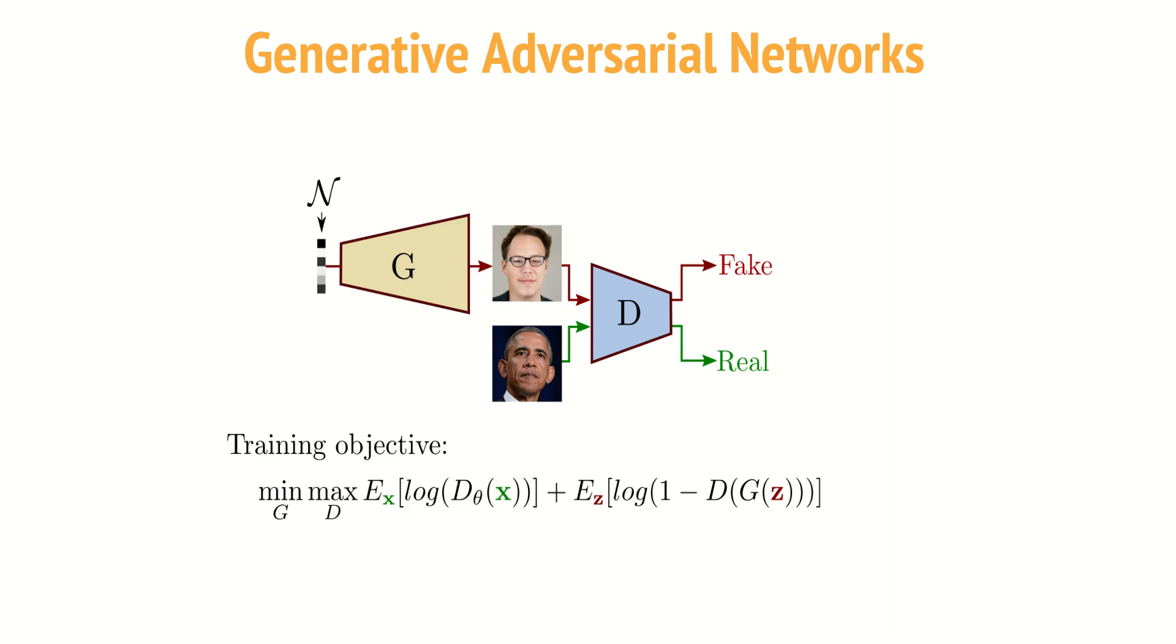More precisely, during training we alternate between updates of the discriminator and updates of the generator. When training the discriminator, we update only the discriminator parameters in order to minimize the binary cross-entropy loss commonly used in binary classification problems. This minimization corresponds to maximizing this equation. When training the generator, we provide as input to the discriminator the generated image and maximize the probability of being a real image according to the discriminator. This maximization can also be written as this minimization problem.